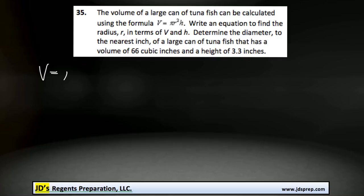being pi r squared h. And that's really just the formula for the volume of any kind of cylinder.